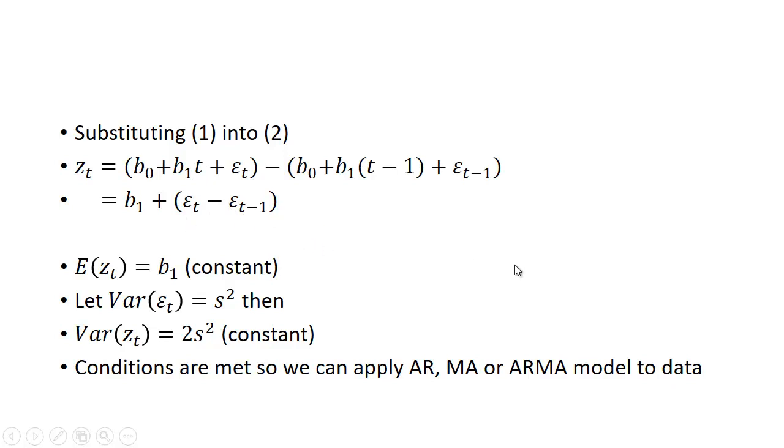How about the variance? Well, if we assume that the variance of epsilon_t, we'll define it as s squared or s raised to the second power, then the variance of z_t turns out to be 2s².